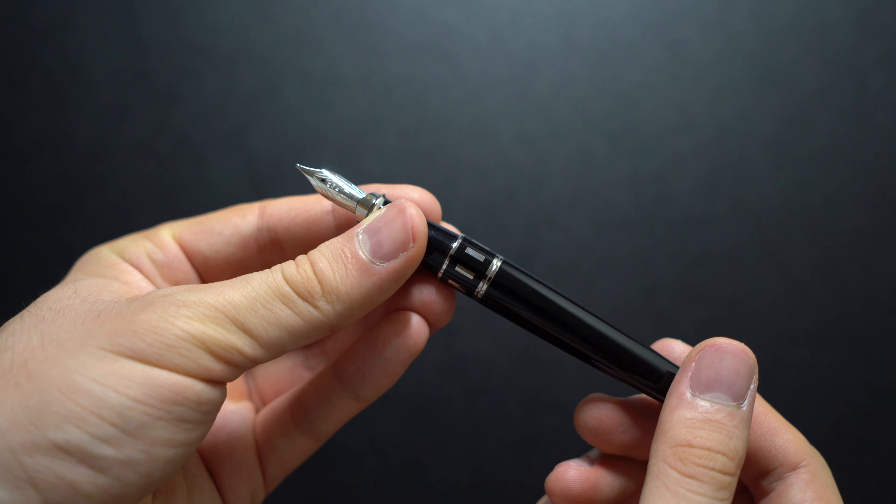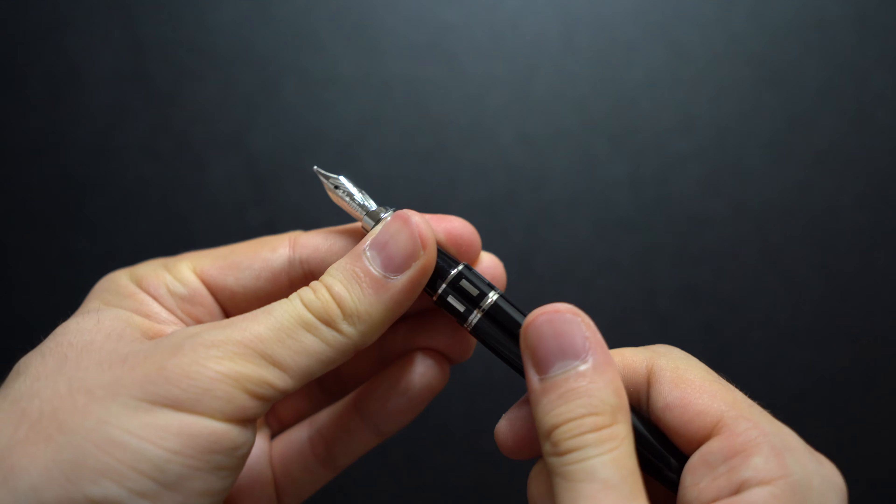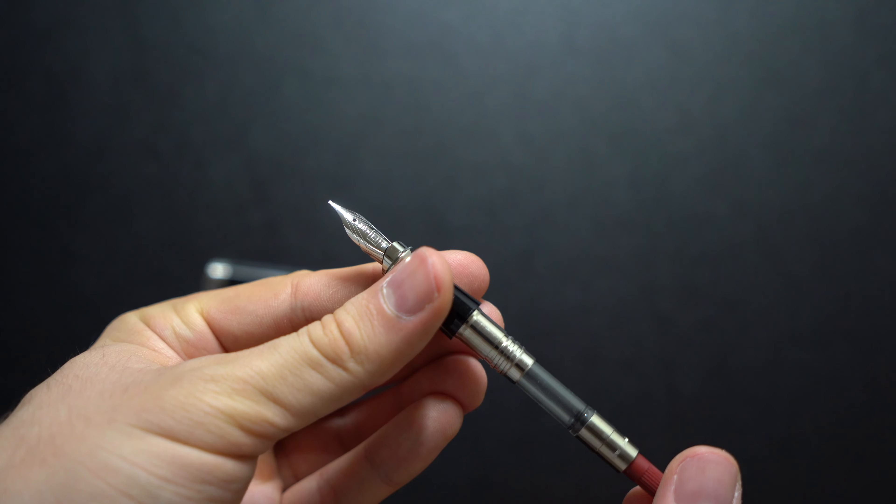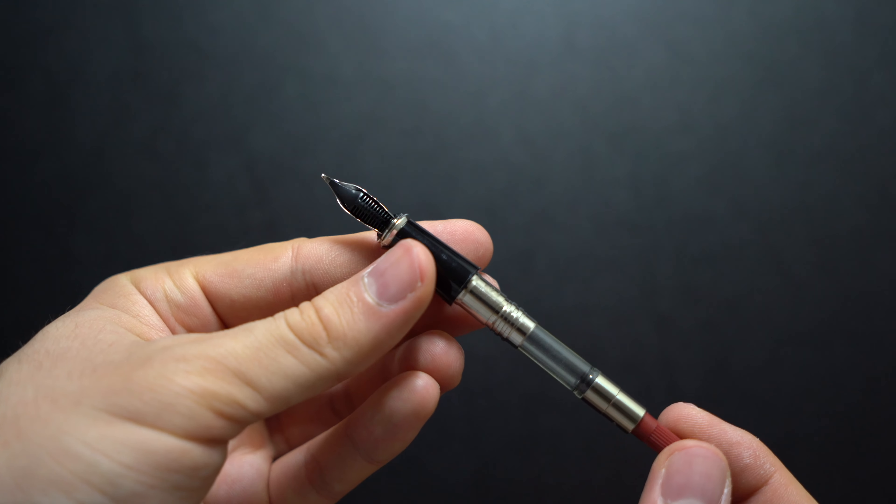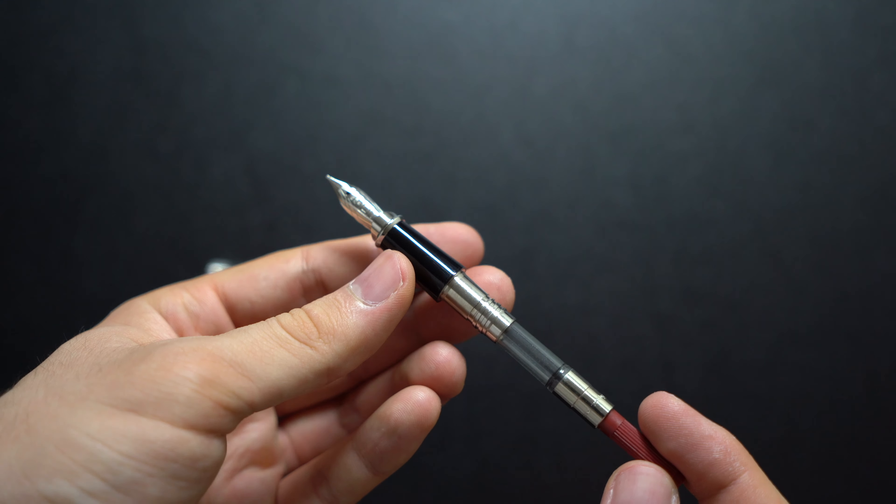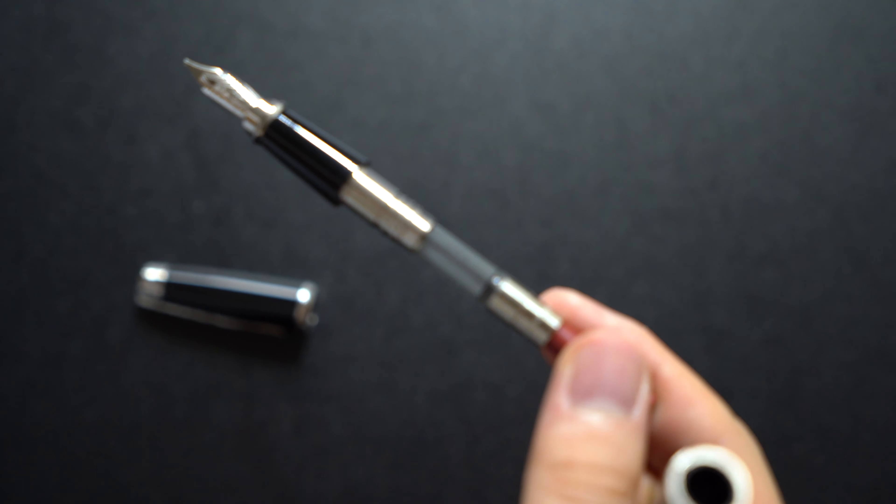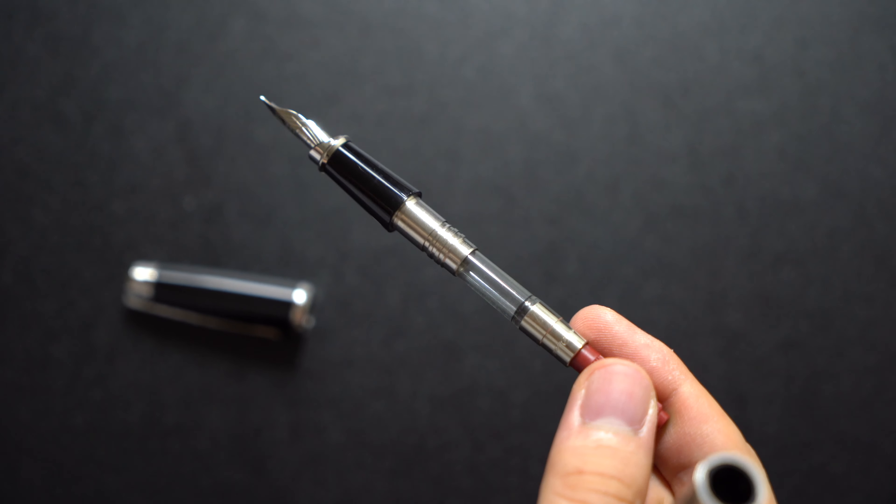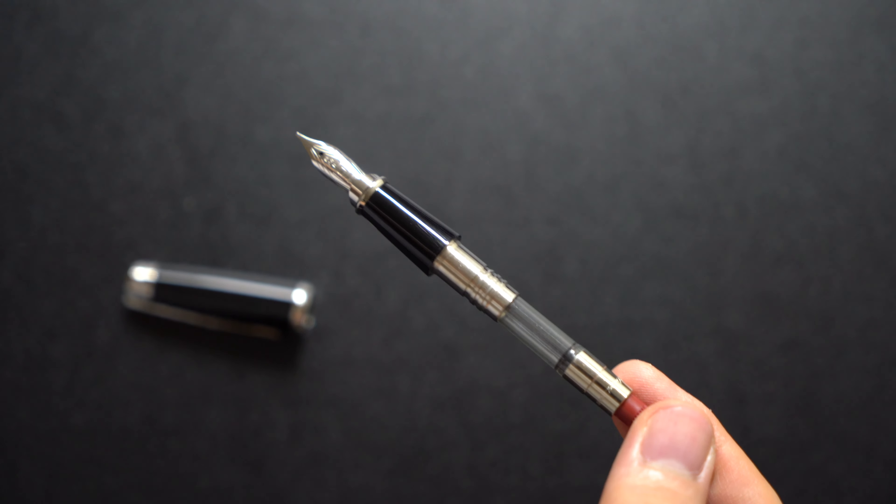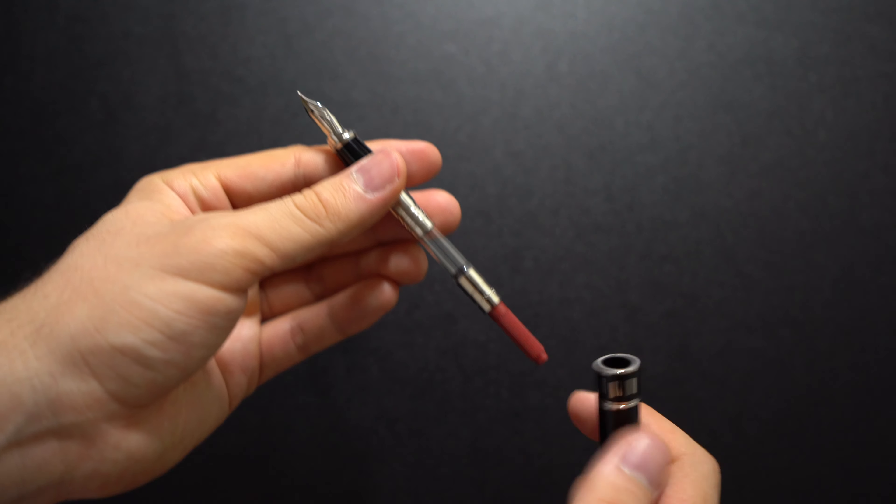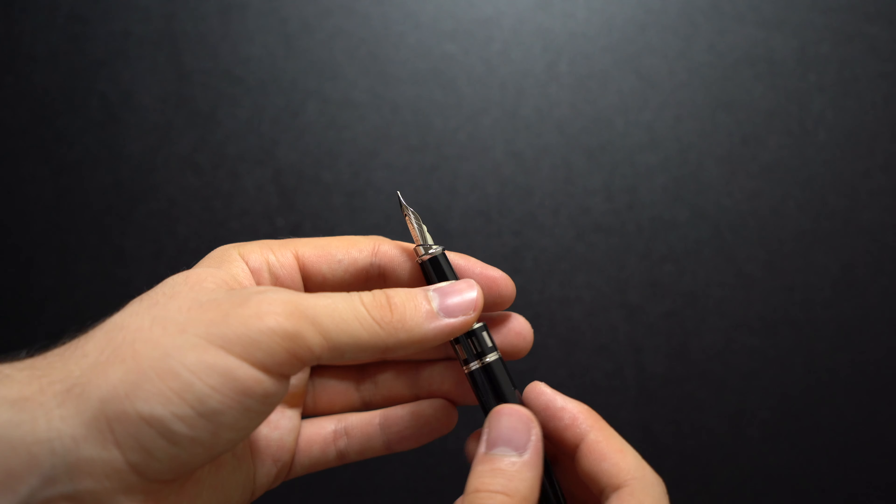As mentioned this is a cartridge converter so this holds good enough ink. I prefer cartridge converters over other mechanisms except for Pelikan 805 because it's easy to clean. I don't care too much about ink capacity but this is good enough. It comes with their own converter which is international.